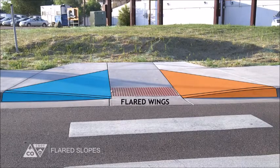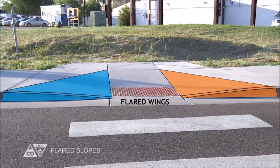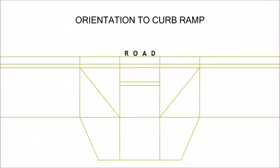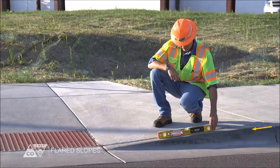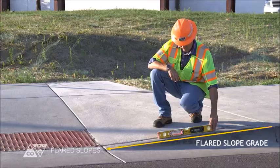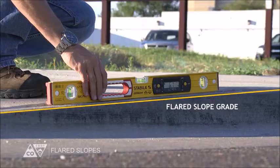If the curb ramp has flared wings on one or both sides, you must record the slope for each flare. When you are facing the street, the right flare corresponds to your right and the left flare to your left. Measure the slope by placing the level along the curb line at the center of the flare.